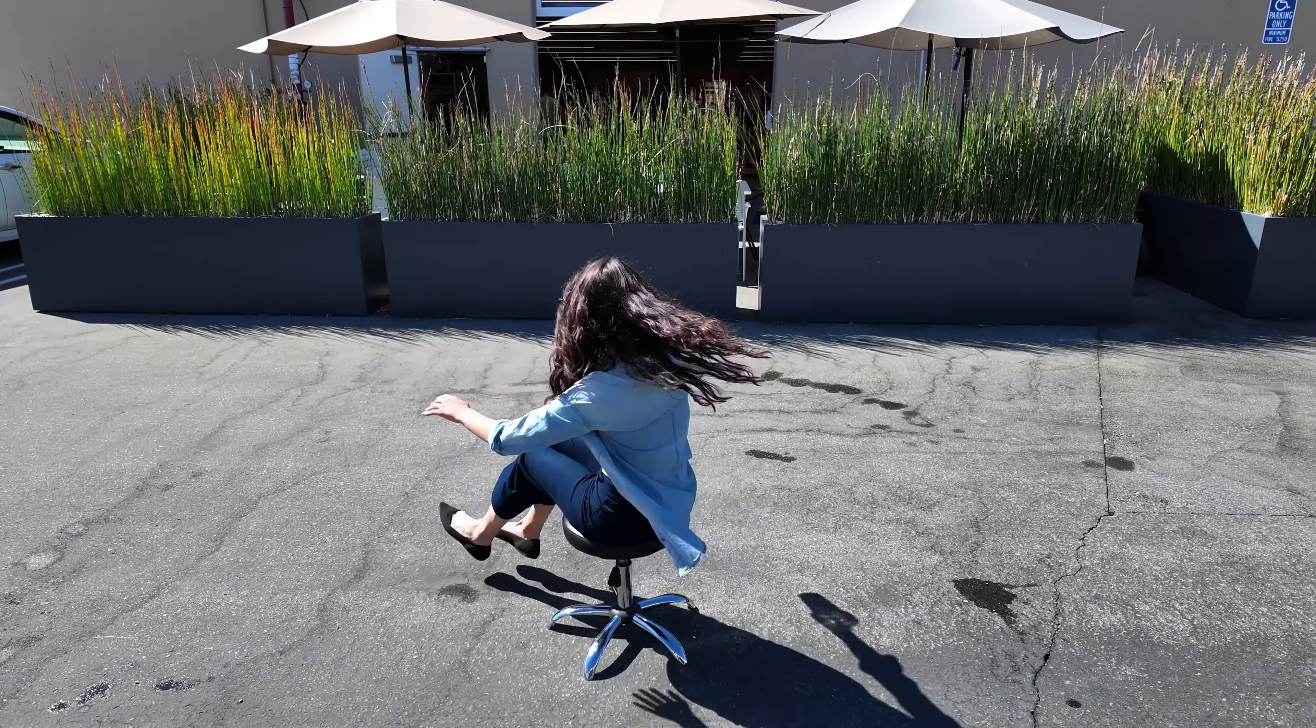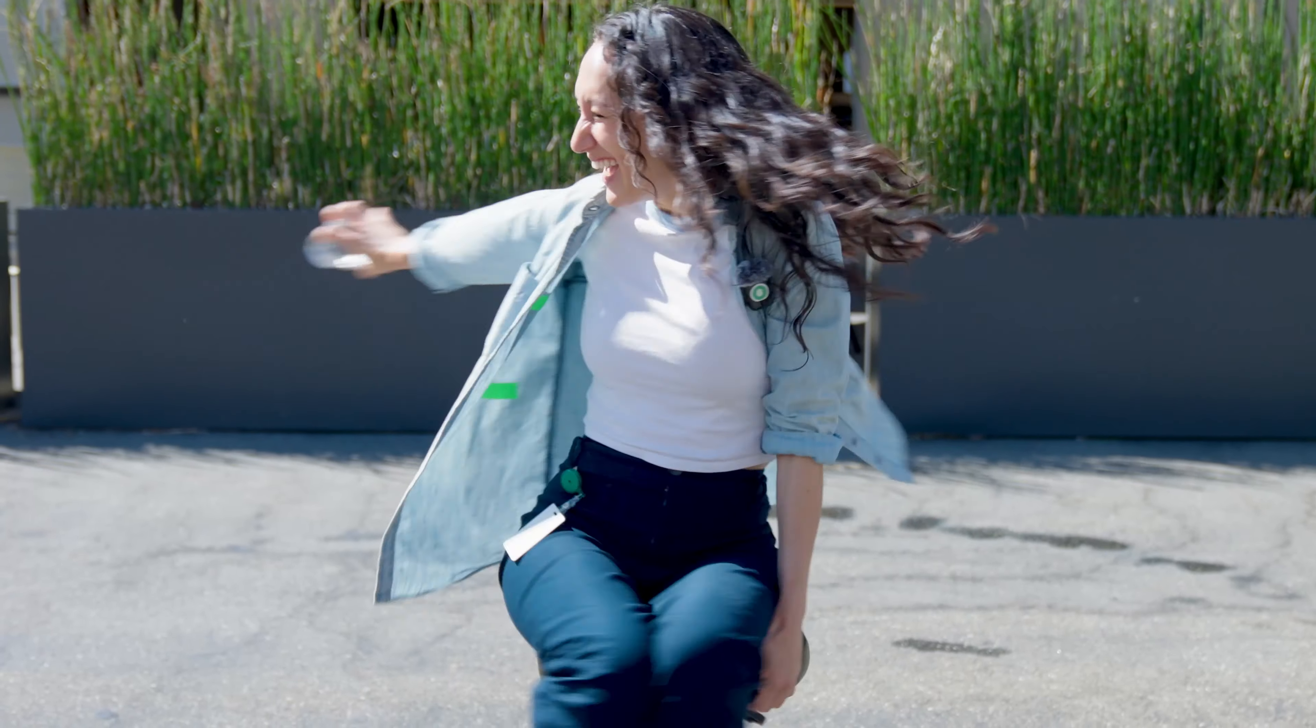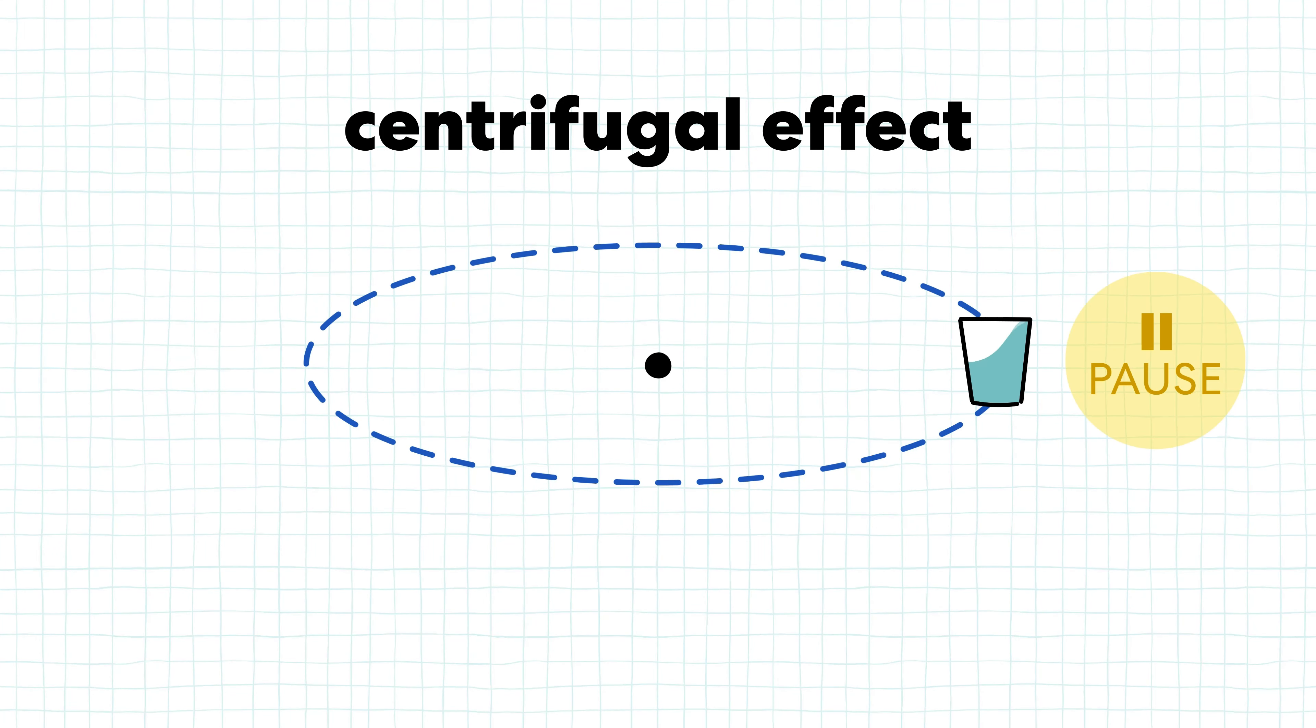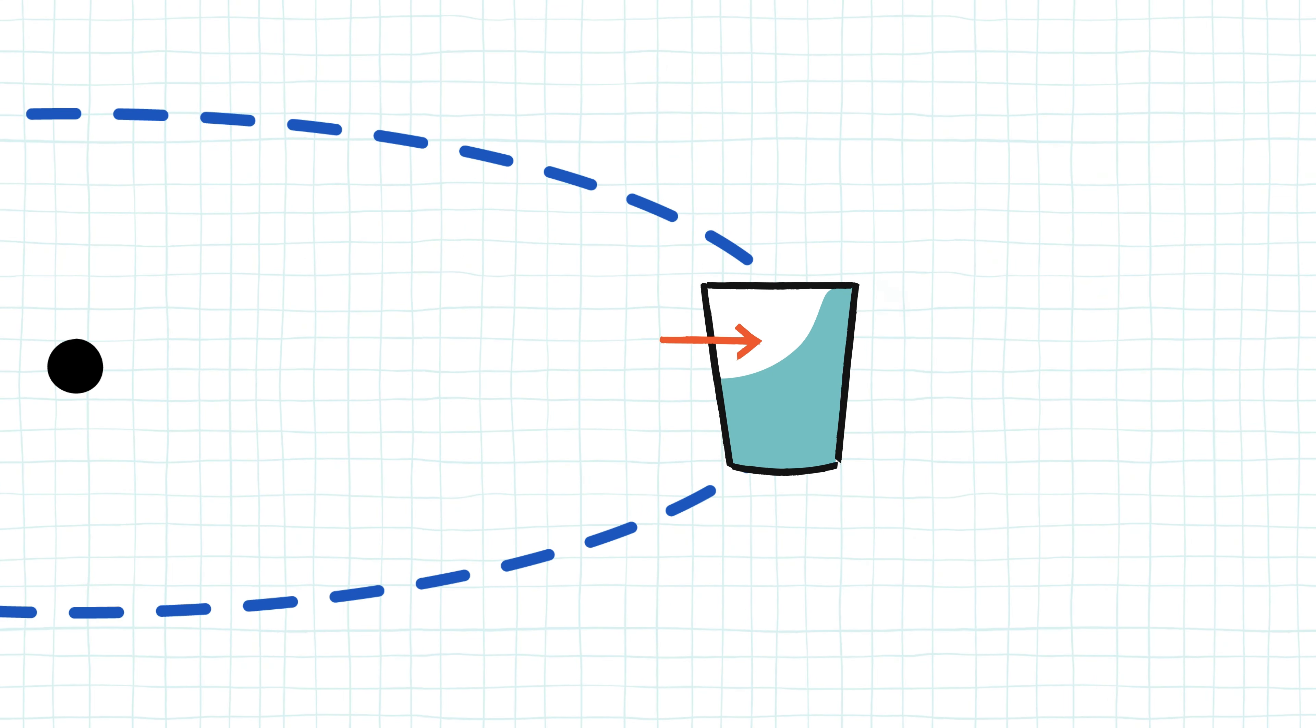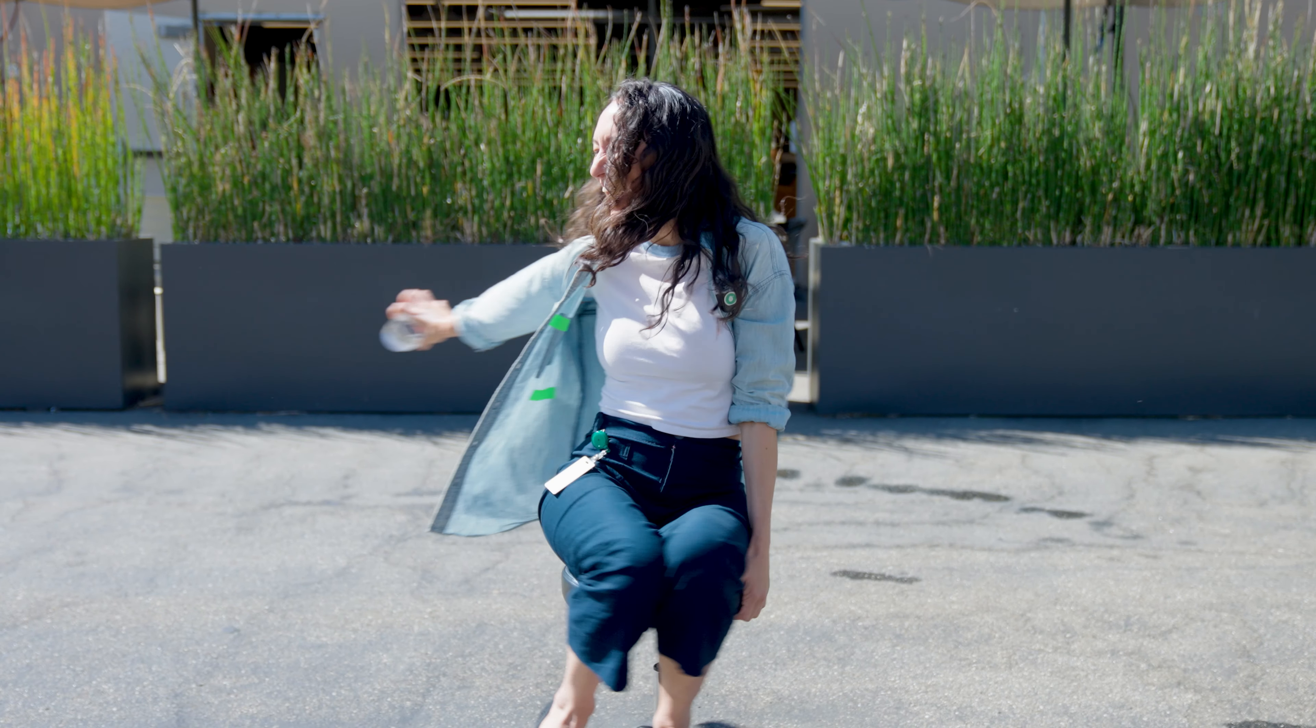So here's why the water isn't spilling out of our cup when it's tipped. This is the centrifugal effect in action. As you're spinning, the water wants to move outwards. So to keep it in the cup, I need to tilt it to keep the water from spilling out over the edge. As I'm spinning faster and faster, I'll tilt it more and more.